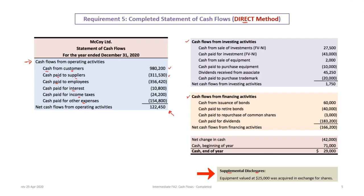With the direct method, the supplemental disclosures do not include cash paid for interest and income taxes because those are already shown right in the body of the statement. The only supplemental disclosure remaining is the equipment valued at $25,000 acquired in exchange for shares. The direct method still meets disclosure requirements — it just presents interest and tax payments within the statement itself.